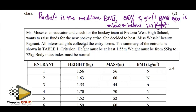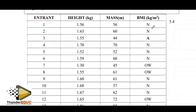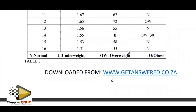Miss M, an educator and coach for the hockey team at Victoria West High School, wants to raise funds for new hockey equipment. She decides to host a beauty pageant. The entry criteria are: height must be at least 1.55 meters, weight must be from 55 kg to 72 kg, and BMI must be normal. N stands for normal, O for obese, OW for overweight, and U for underweight.